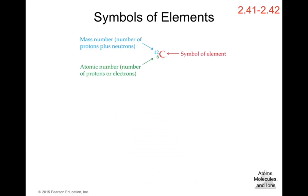Now let's talk about the symbols of elements. For carbon, we have the symbol C, the atomic number 6, and the mass number 12. The symbol C represents carbon. The number 6 is the atomic number, which also equals the number of protons or electrons. The number 12 is the mass number, which represents the number of protons plus neutrons.